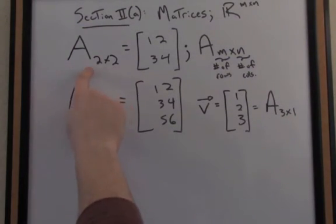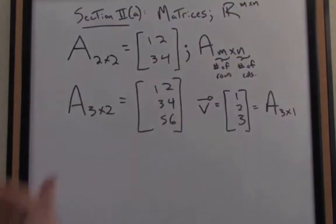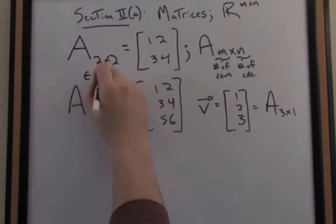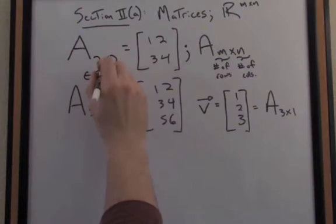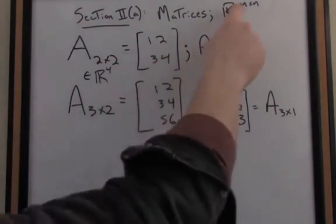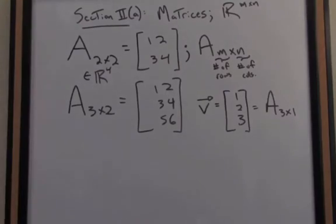When I constructed my two-by-two matrix, I really had four choices for the entries I could fill in. So for that reason, you can think of this matrix as an element of R to the two times two, or R to the four. So this matrix lives in R to the two times two, or R to the fourth power.